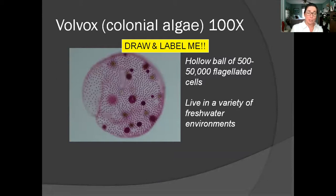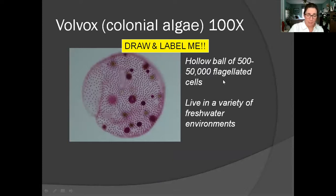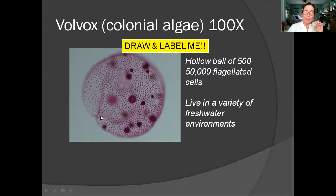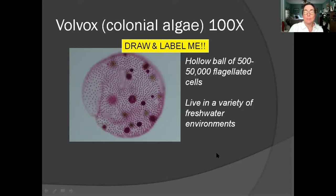Finally, I'm going to have you draw volvox. Volvox are actually huge colonies of individual cells. Every tiny polka dot type thing is an individual cell that has flagella on it. They make this hollow sphere out of those cells, and down inside the sphere there can be clusters of cells starting to form a new colony — eventually they'll burst out of the original colony. These can be really huge or smaller depending on how old the colony is, and they live in a variety of freshwater environments.